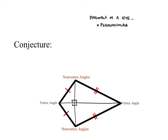The other thing a diagonal does within a kite is it bisects the vertex angles. So it cuts angle A in half perfectly, where those two angles are the same measure. And it cuts angle B perfectly in half as well. The diagonals of the kite also do the following.